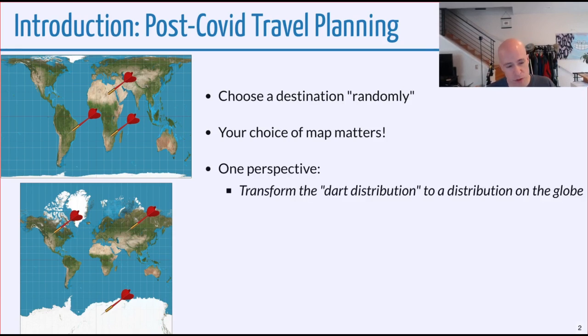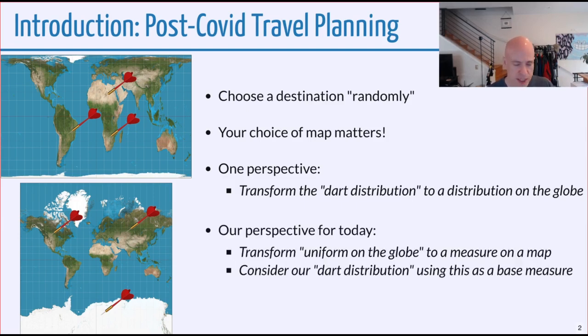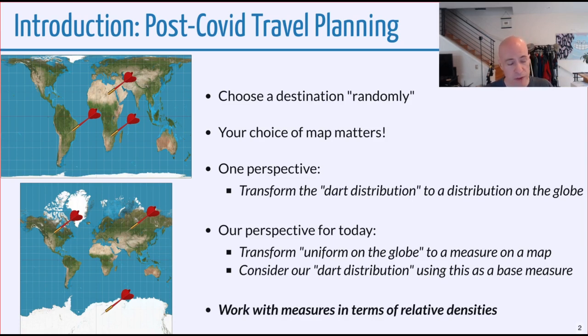There are a couple of ways to look at this. One perspective is to take the distribution of where we might throw the darts and transform that to a distribution on the globe. We're going to take a different perspective for the rest of this talk and think of this as starting with a uniform distribution on the globe, transform that to some measure on the map, and then that will be our base measure. All of the densities that we work with are going to be relative densities between two different measures.